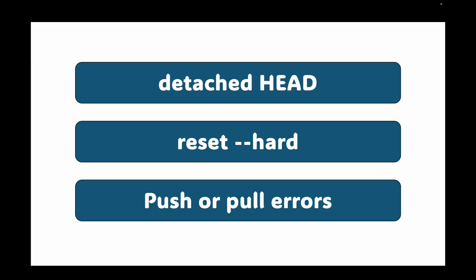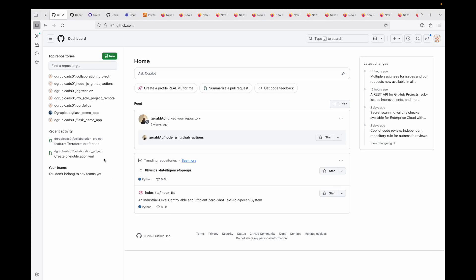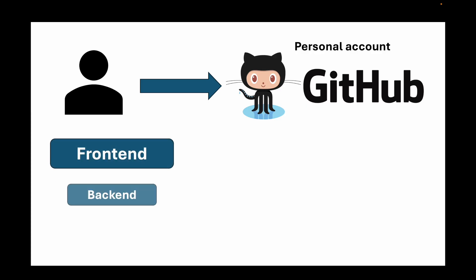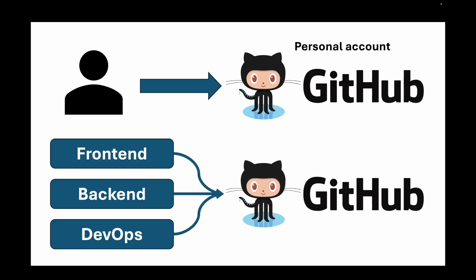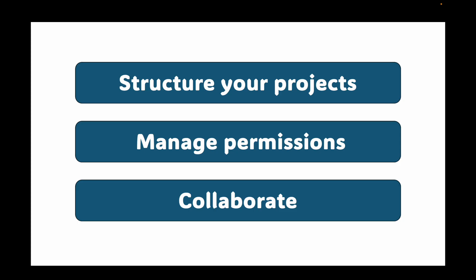In today's session we are going to talk about GitHub Organizations and Teams. When you're working alone on a project, your personal GitHub account is all you need. But what happens when your project grows to include multiple developers — a front-end team, a back-end team, a DevOps team, and a dozen different repositories? Managing all of that from a personal account becomes a nightmare. That's where GitHub Organizations and Teams come in.